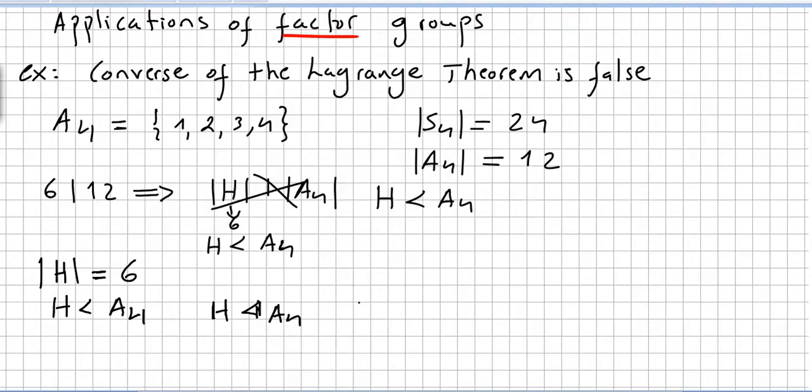Let us use the factor groups and see what would be the order of the factor group A4 by H. Well, that would be the order of A4 is 12, the order of H would be 6, so that would be 2. So this group exists, this factor group A4 by H, and the order of this group will be 2.